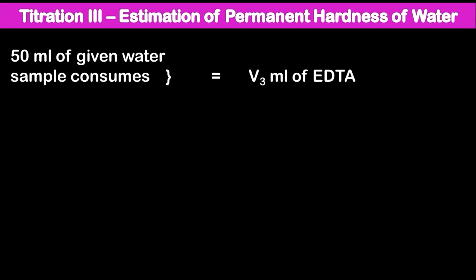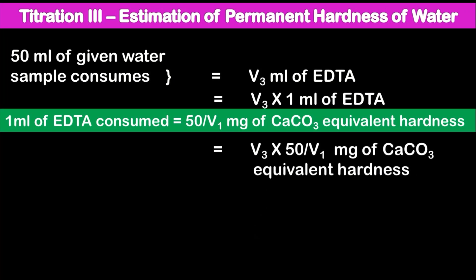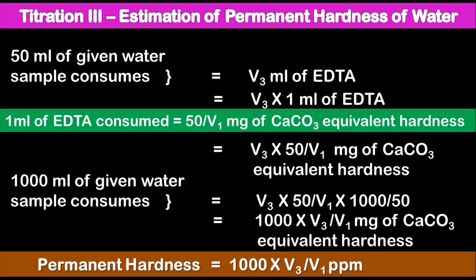For permanent hardness: 50 ml of boiled water sample consumes V3 ml of EDTA. Writing as V3 × (1 ml of EDTA), and substituting 50/V1 mg per ml of EDTA, we get V3 × 50/V1 mg of calcium carbonate. Converting to 1000 ml: V3 × 50/V1 × 1000/50 = 1000 × V3/V1 mg of calcium carbonate. Therefore, permanent hardness = 1000 × V3/V1 ppm or mg/L.